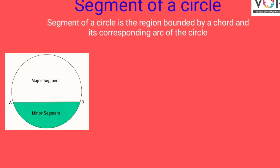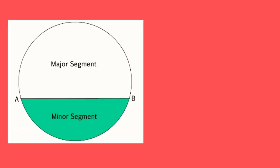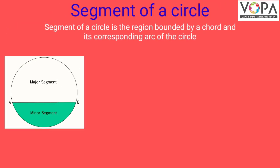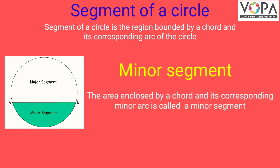If AB is the chord, then it divides the circle into two segments: minor segment and major segment. The area enclosed by a chord and its corresponding minor arc is called a minor segment. Here, segment AXB is a minor segment.